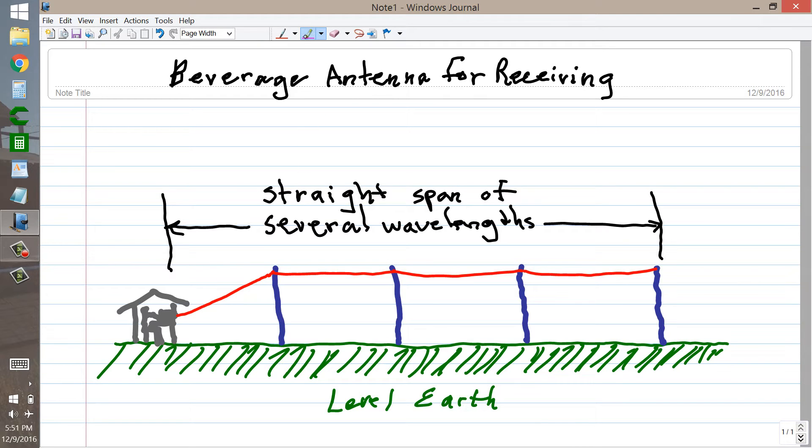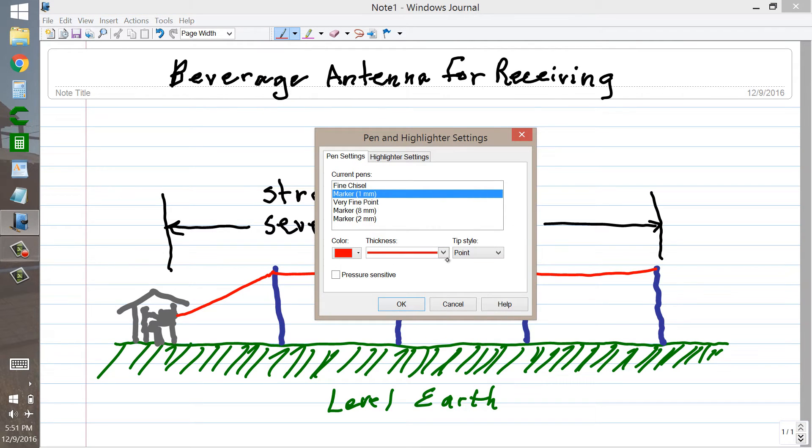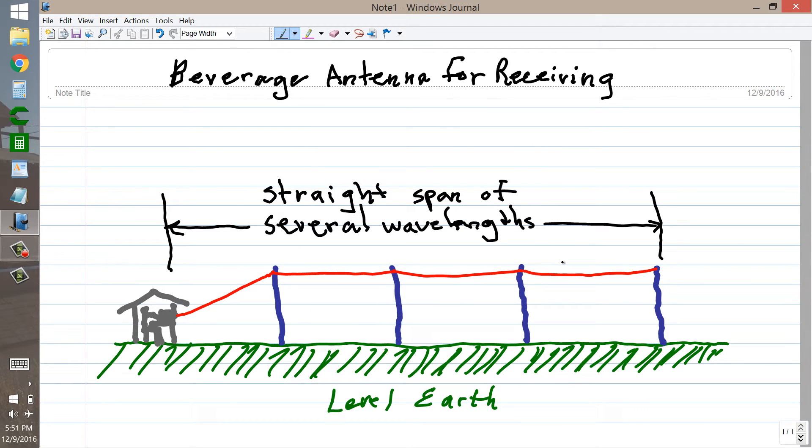It has a feed point impedance of approximately 600 ohms. I think I'm going to make this black so I can write in black from now on. 600 ohm, purely resistive feed point impedance. Well, it isn't necessarily purely resistive, but you can use a transmatch and tune this thing and match it to your radio.